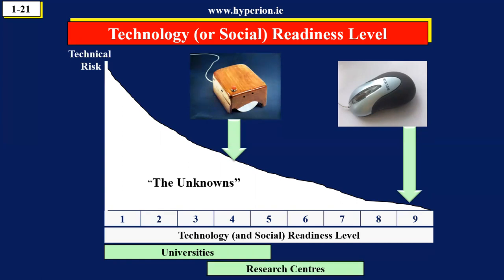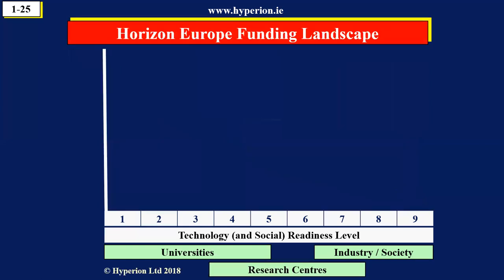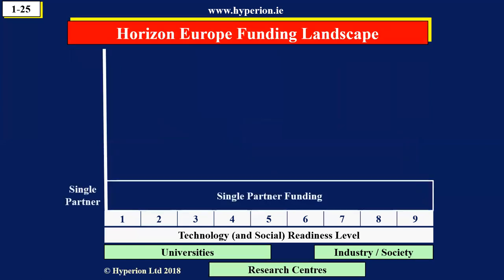Universities normally operate in TRL 1 to 5. A research center is more about developing prototypes and testing them, whereas companies and society are more interested in technologies that are nearly fully developed. So it's a rough table, but it gives an indication of the different interests of the different types of organizations. Let's see how Horizon Europe maps onto this.